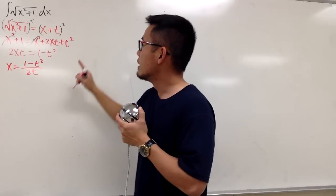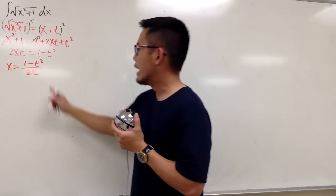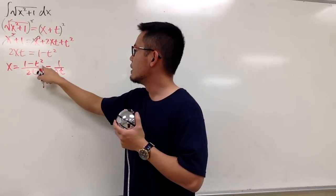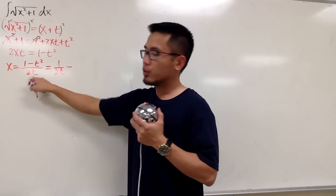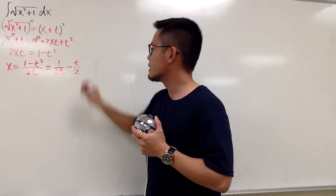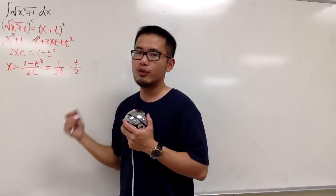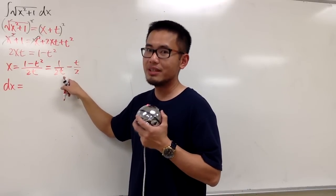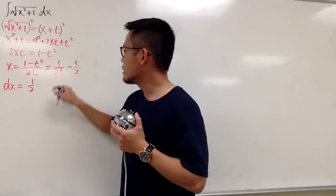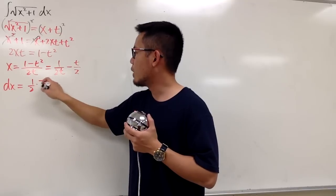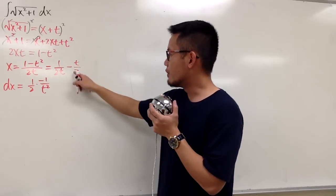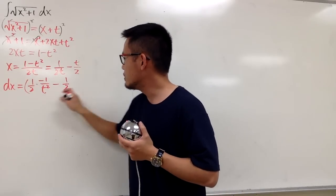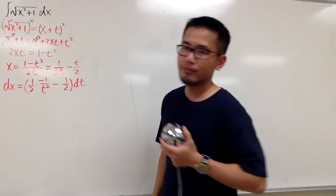Now I want to take the derivative of x to find the differential dx. I'll split the fraction: x equals 1 over 2t minus t over 2. Differentiating, dx equals one half times the derivative of 1 over t, which is negative 1 over t squared, and the derivative of negative t over 2 is just minus 1 half. So dx equals (negative 1 over 2t squared minus 1 half) dt. And we are ready to go.